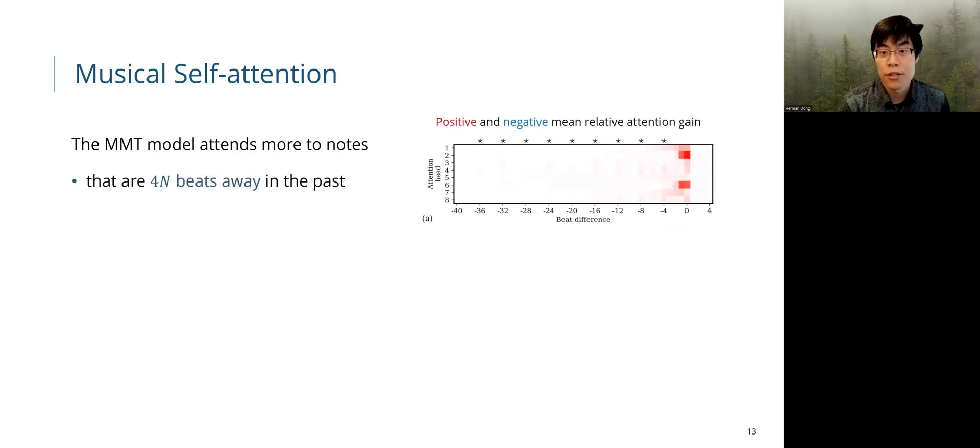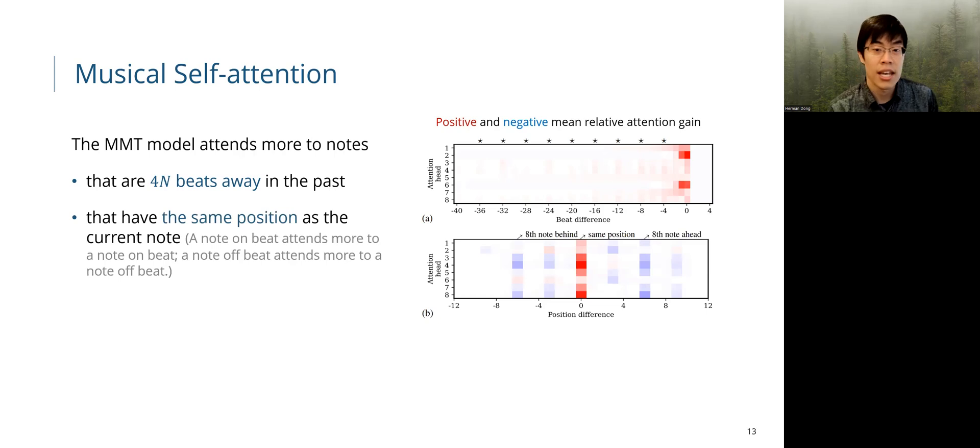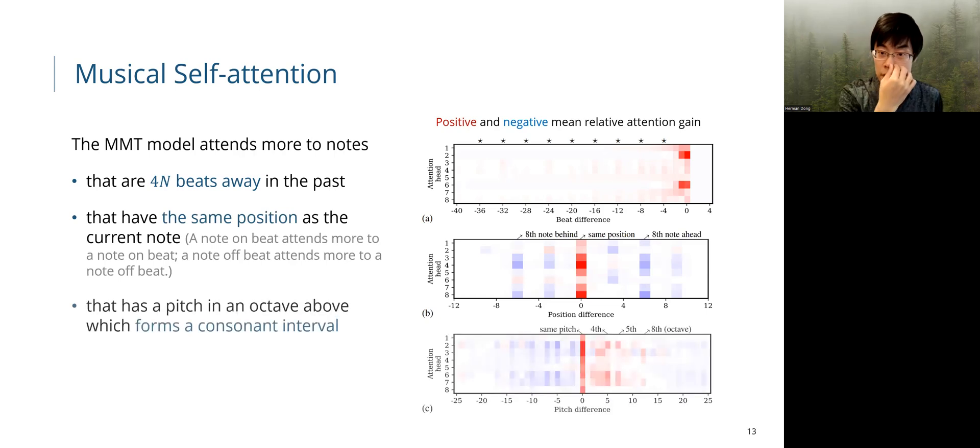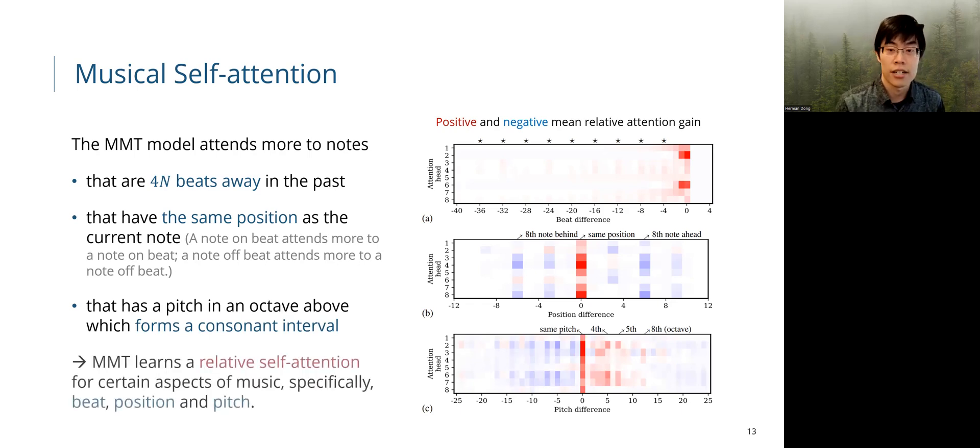With this quantity, we find out that our MMT model attends more to notes that are four beats away in the past, that have the same position as the current note, that has a pitch which forms a consonant interval in an octave above. In short, MMT does learn relative self-attention for such certain aspects of music.